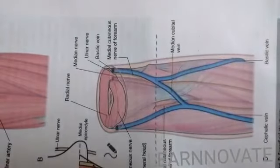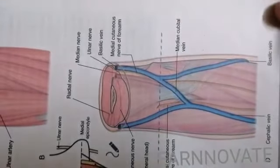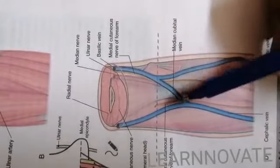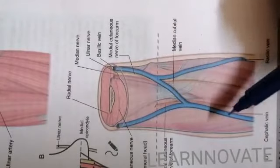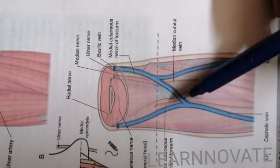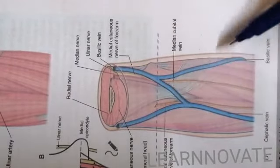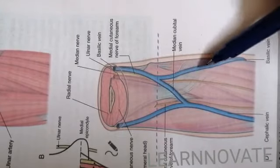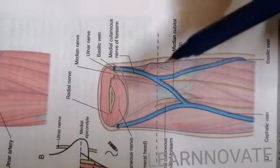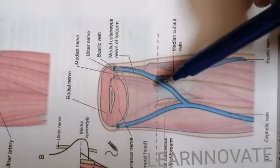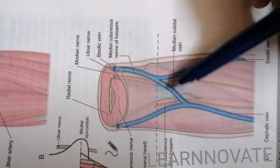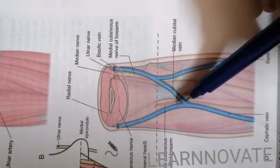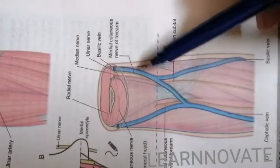One more thing we can see in the cubital fossa is the formation of a medial cubital vein. This vein is formed from the combining of a cephalic vein from the lateral side and the basilic vein from the medial side. When these two veins join with the vein of the arm, it will going to form the medial cubital vein.